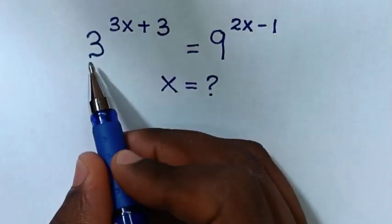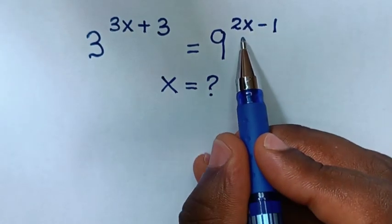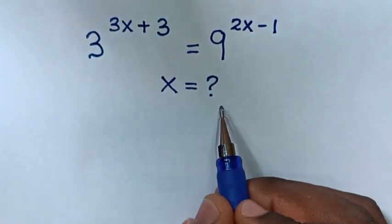Hello! How to solve 3 power of 3x plus 3 is equal to 9 power of 2x minus 1 to find the value of x?